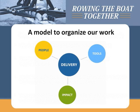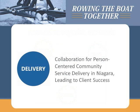Taking a look now at a model to organize our work. Looking at these circles, the one in the center is delivery — person-centered delivery — that's our core objective that has emerged from those themes. There are three elements that support that goal: some proven tools to inform our work, people — engaged knowledgeable people — and the idea of collective impact that we can have by working together in a strategic way. The core theme in the model is collaboration for person-centered community service delivery in Niagara, leading to client success.